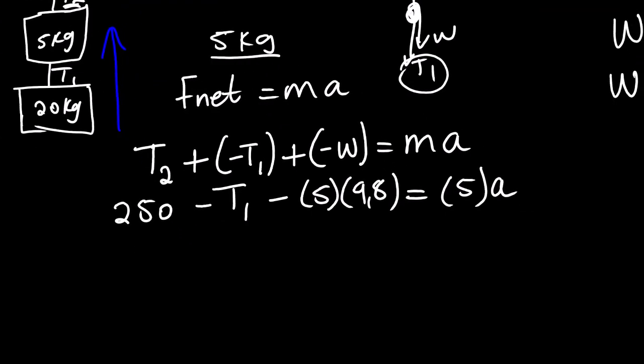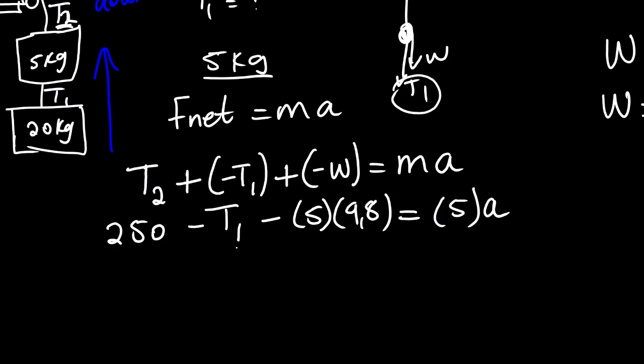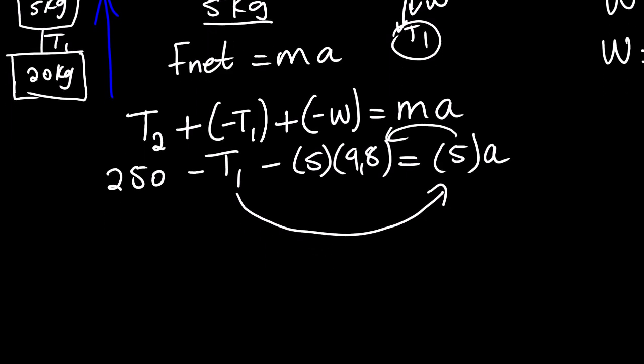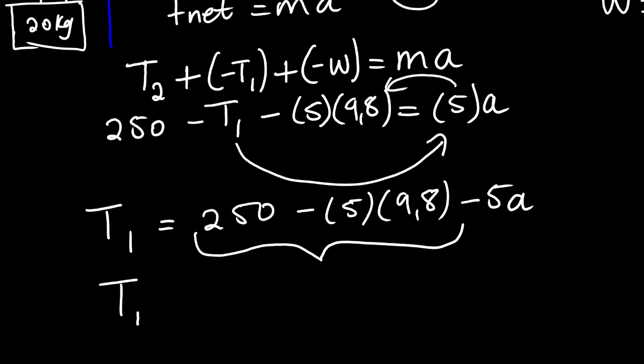Remember, we don't know the acceleration of the system. We are looking for T1, so we need to make T1 the subject of the formula. So what we can do, we can transpose T1 to this side and take 5a to that side, such that we have something like this: T1 is equals to 250 minus 5 times 9.8 minus 5a. So we can quickly simplify this: 250 minus 49. We equate this as equation 1. We generated this equation from the 5 kg block.